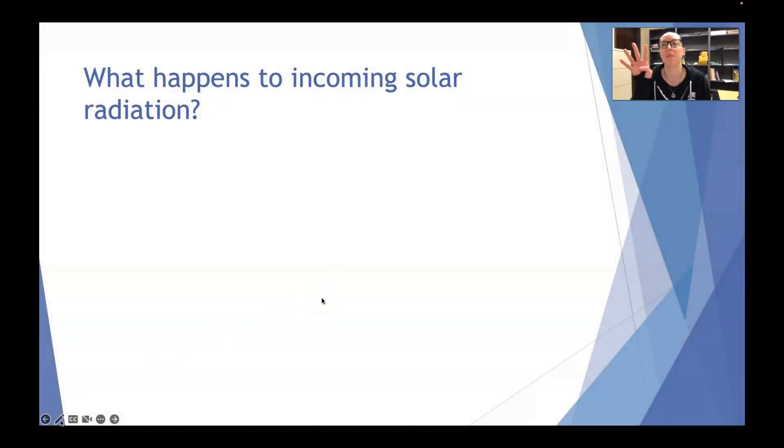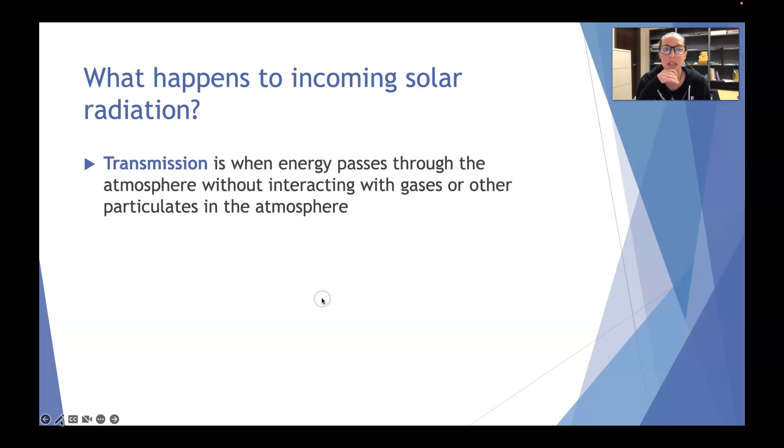So there are four main processes that happen to energy as it's either trying to come into or leave our atmosphere. And the first one is transmission. So it goes straight through our atmosphere. It does not interact with any of the gases or any molecules or any other particulates in the atmosphere. It just puts its blinders on and says, no, don't talk to me, don't look at me, don't even breathe on me. I am out. And it just goes straight through the atmosphere.